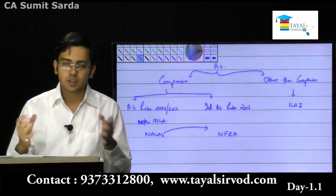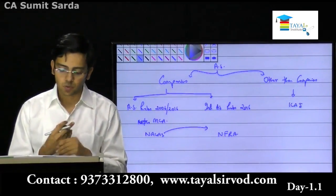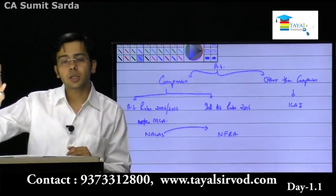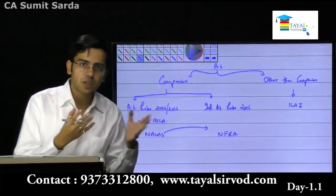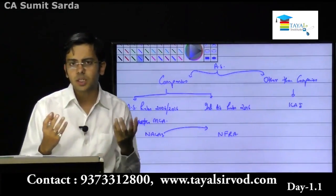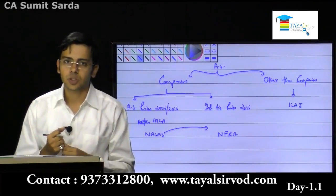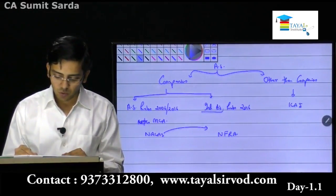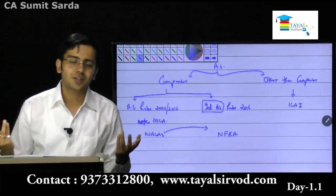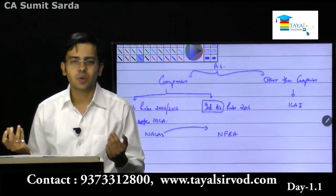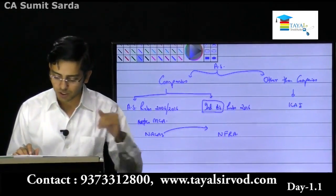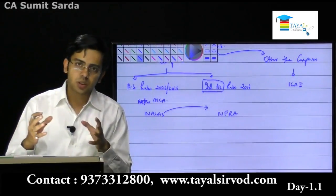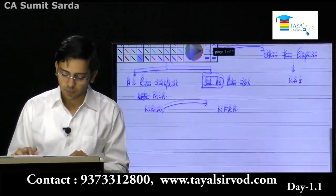Accounting standards being split into three parts: one is AS rules 2006 for companies, second is accounting standards for other than companies — where we do not see much difference between accounting standard rules and accounting standards — and third is Indian Accounting Standards, which many students are worried about. Do not worry, it is very easy. Just trust the process and move ahead. For Indian Accounting Standards 2016, the power has been given to NFRA, but since NFRA is yet to be established, NACAS currently handles everything. For other than companies, whatever ICAI says is final.